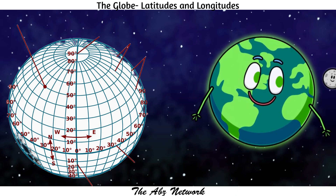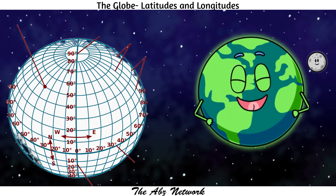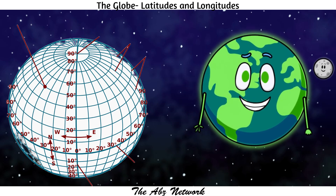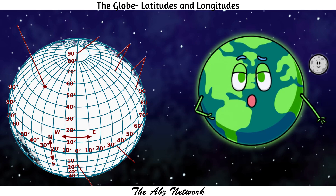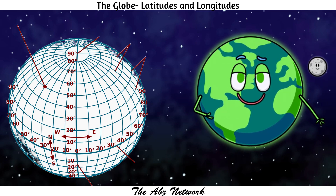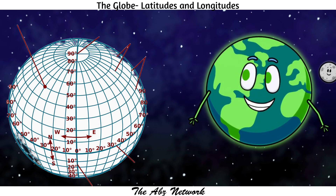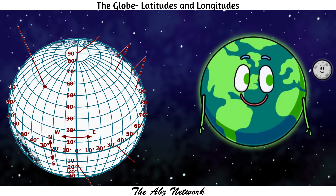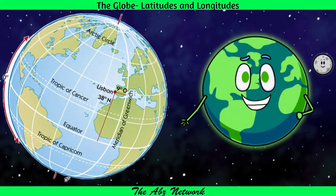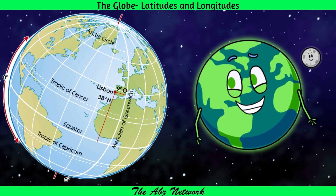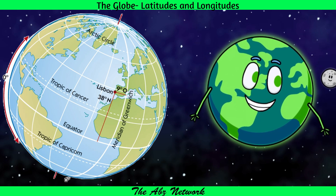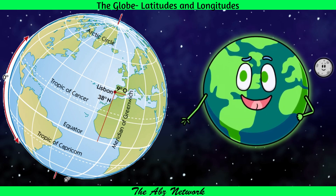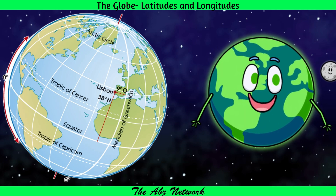The International Date Line is a north-south line in the Pacific Ocean where you turn your calendar back or ahead one day. The center of the time zone roughly follows 180° longitude without crossing any land mass. When you cross the International Date Line moving towards the east, you turn your calendar back one day, whereas when you go from the west across the International Date Line, you turn your calendar ahead one day.